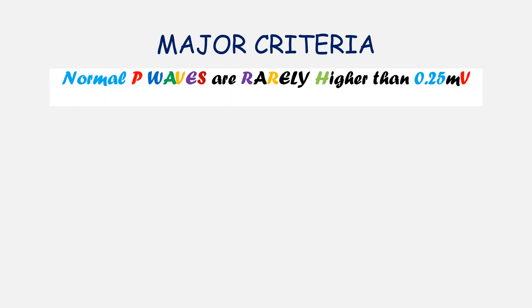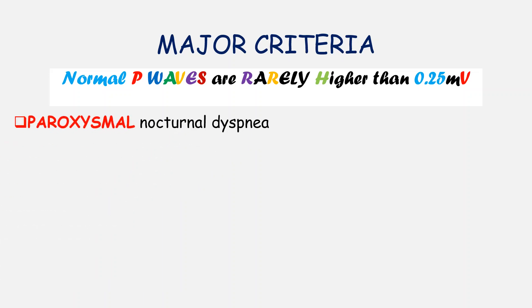Let's start with the major criteria for the diagnosis of heart failure. I will start off with a very important statement in the interpretation of an ECG: normal P waves are rarely higher than 0.25 millivolts. This statement is going to act as our mnemonic for remembering the major criteria. We shall skip the word 'normal' and start with the letter P.